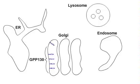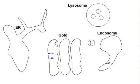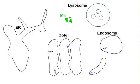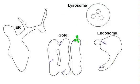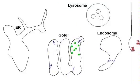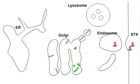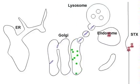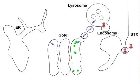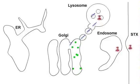The addition of manganese diverts the blue GPP-130 out of its normal cycling pathway to the lysosome where it's degraded. Here we see green manganese causing GPP-130 to move to lysosomes and get degraded.